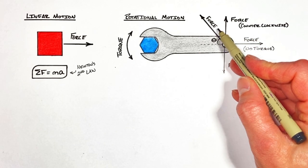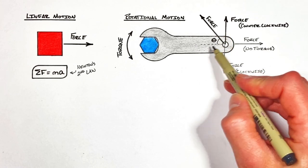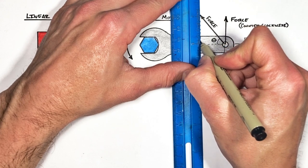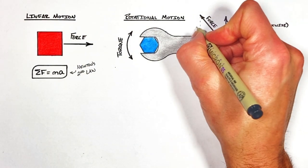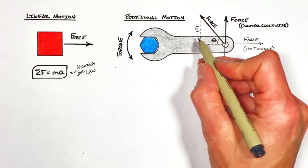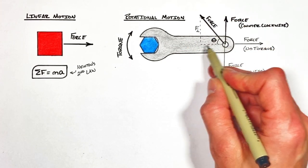Because this force is at an angle, we really want to break this force up into two components. The first being perpendicular to the wrench. I'll show this as just F with a little perpendicular symbol next to it. And then the second component being parallel to the wrench.